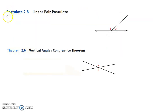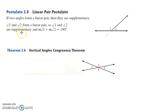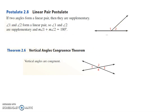We've got another postulate and then one more theorem. The Linear Pair Postulate: if you have angles that form a linear pair, then they are supplementary. And the Vertical Angles Congruence Theorem — this one's pretty easy: vertical angles are congruent. So angles 2 and 4 are congruent, and angles 1 and 3 are congruent — they're vertical angles.